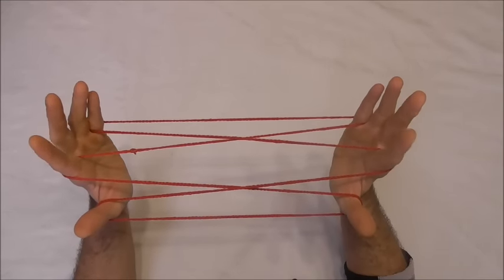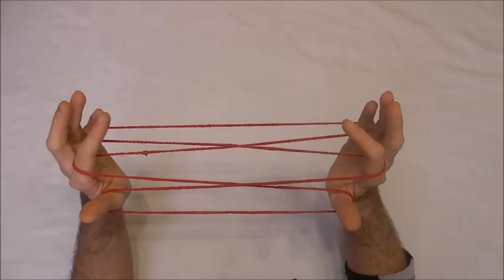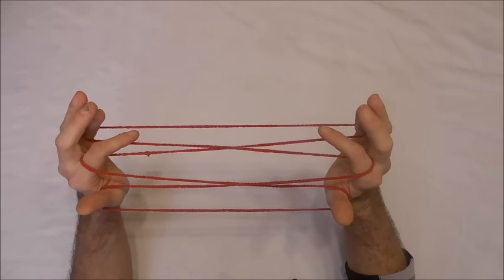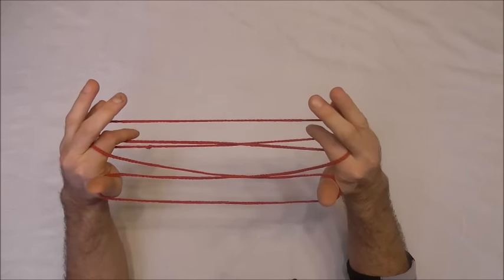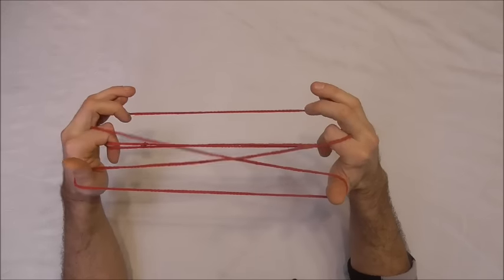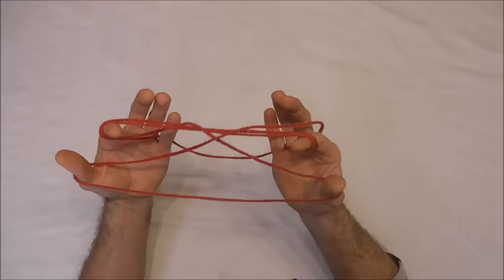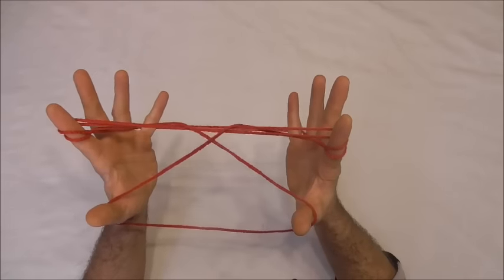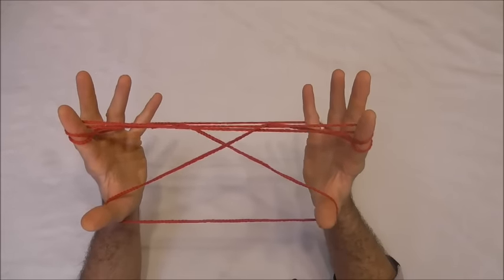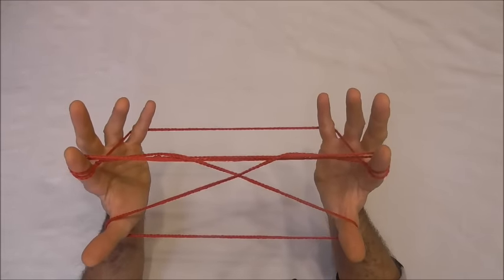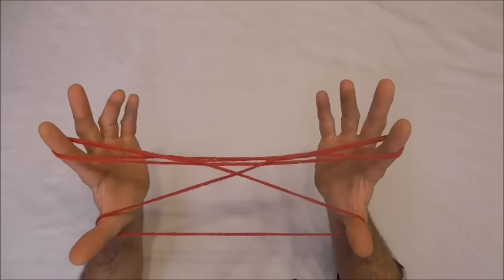Next I want to take my pointer fingers, place them into the little finger loops from above. Rotate them through until they go in between the gap of my pointer finger and thumb. So it should look like that and now I want to release the little fingers.